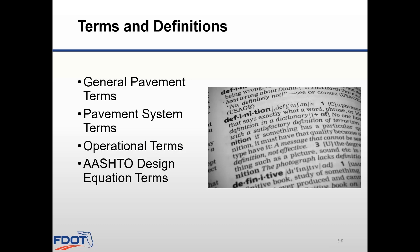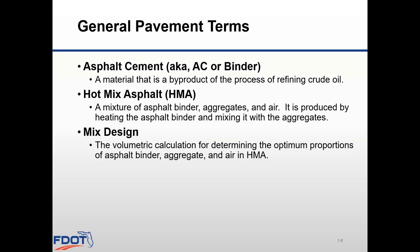Now we'll go over our terms and definitions. First, we'll discuss some general pavement terminology, then get into more specific terms related to the pavement system itself. We'll also go over some operational terminology including traffic information as it relates to pavement design. Finally, we'll go over the AASHTO design equation and look at each of the terms in the equation.